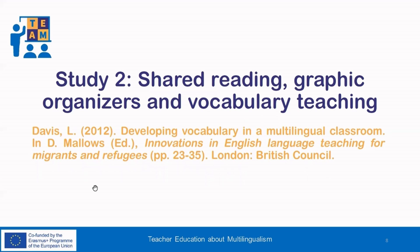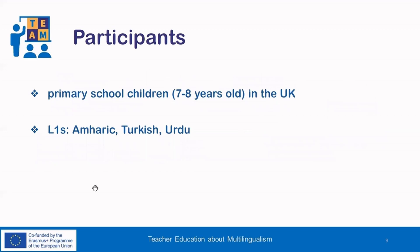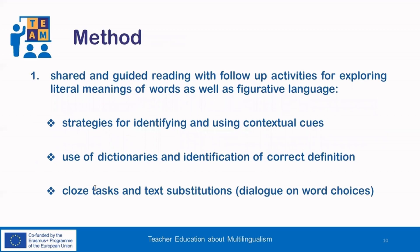The second study was conducted by Davis in 2012 and investigates shared reading, graphic organizers, and vocabulary teaching. The group of participants consisted of primary school children aged around 7 to 8 years old living in the UK. The family languages represented in the study were Amharic, Turkish and Urdu. The method used in the study included shared and guided reading with follow-up activities for exploring literal meanings of words as well as figurative language. During the session, the teacher modeled strategies for identifying and using contextual cues, as well as for using dictionaries and deciding which definition is correct according to the context. Moreover, cloze tasks and activities of text substitution were used, generating useful dialogues on the effect of word choices.